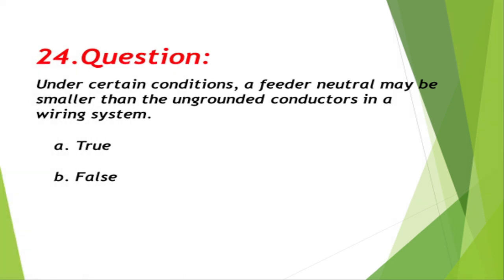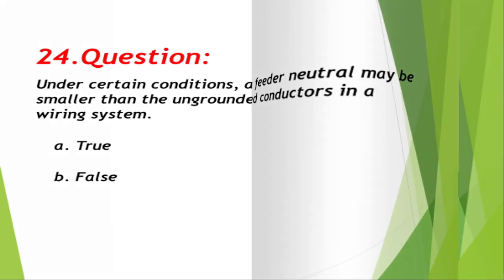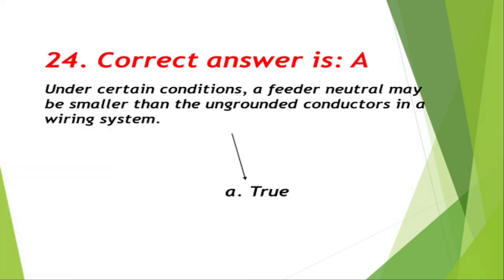Question number 24: Under certain conditions, a feeder neutral may be smaller than the ungrounded conductors in a wiring system. A. True, B. False. Correct answer is A, true.